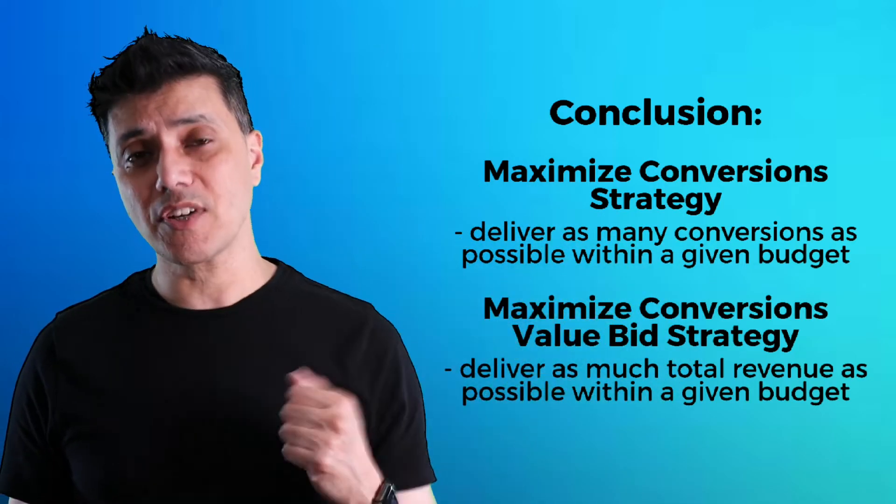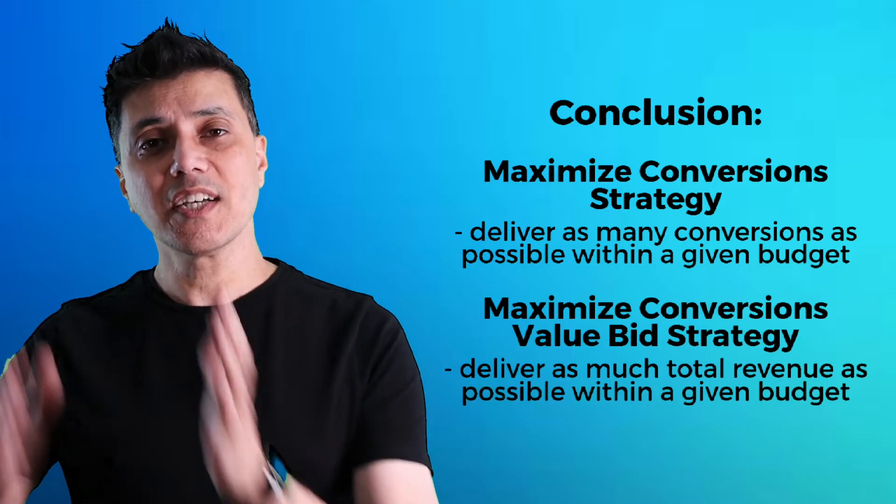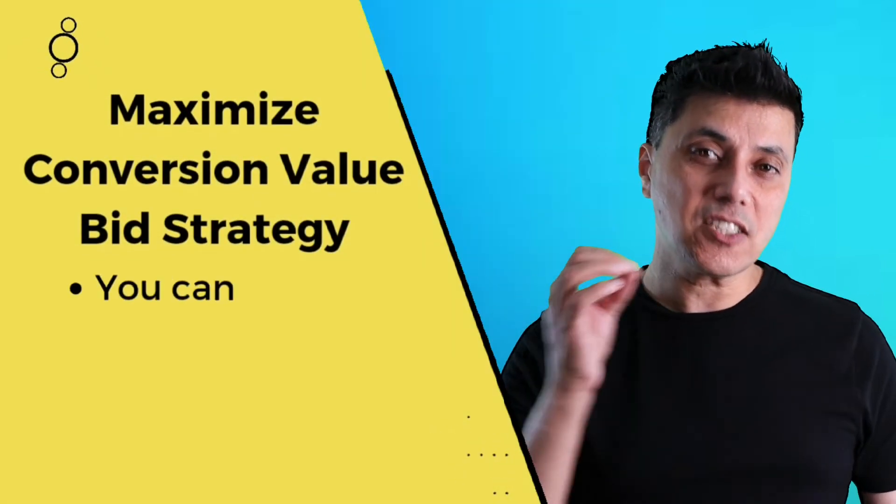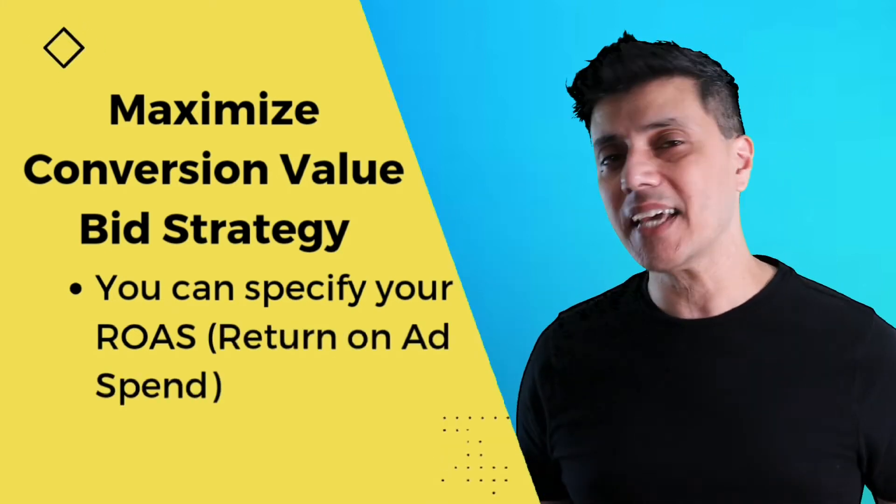In a nutshell, the maximized conversion bid strategy will attempt to drive you the maximum number of conversions, while the maximize conversion value bid strategy will try to increase your revenue as much as possible. On the maximized conversion value bid strategy, you can also specify a target ROAS — return on ad spend — such as 500%, and that's what Google will try to achieve. Make sure you have at least 15 sales in the last 30 days before using either strategy.